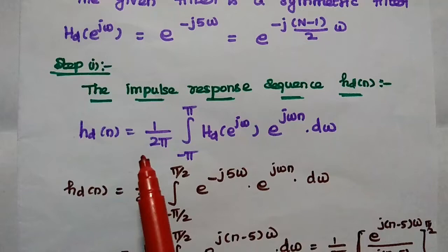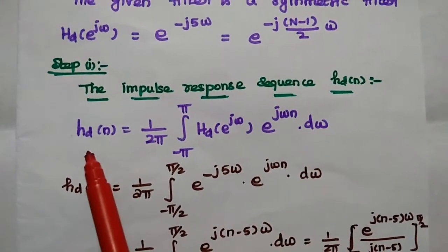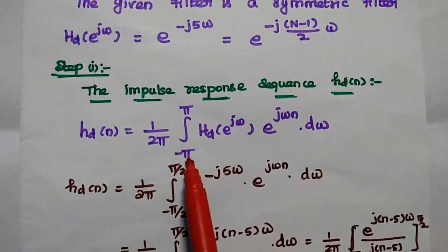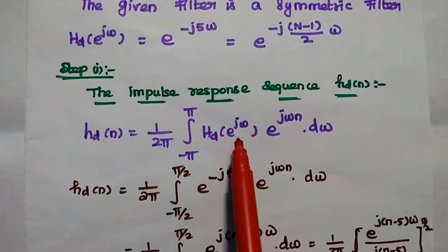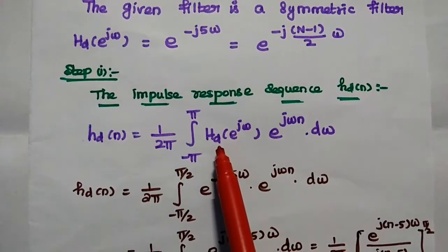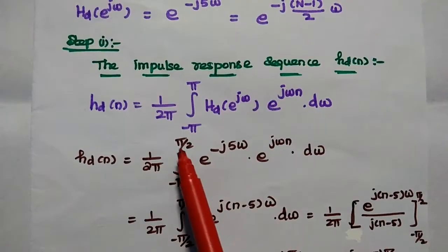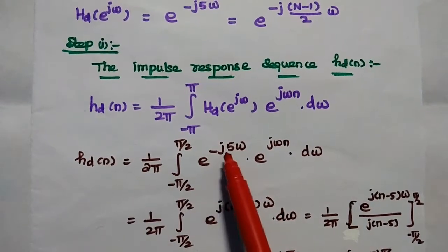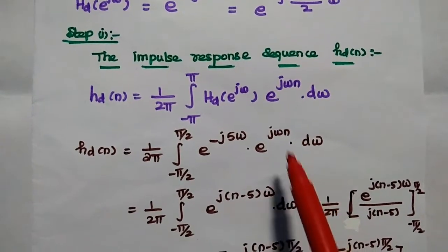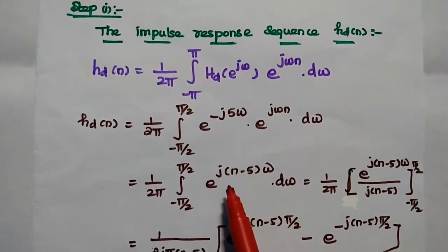The first step in the design process is to obtain the impulse response sequence hd(n). It can be obtained using the formula hd(n) = (1/2π) × integral from −π to +π of hd(e^jω) × e^(jωn) dω. We substitute the value of hd(e^jω), and the limit changes from −π/2 to +π/2, giving e^(−j5ω) × e^(jωn) dω.